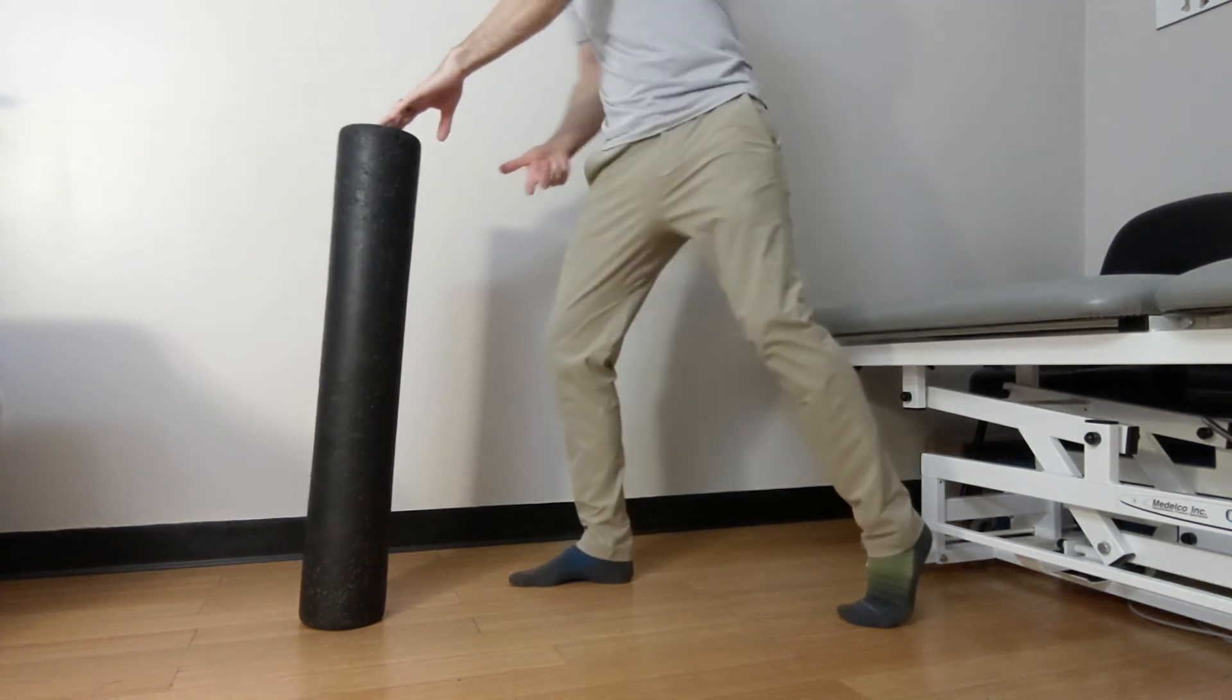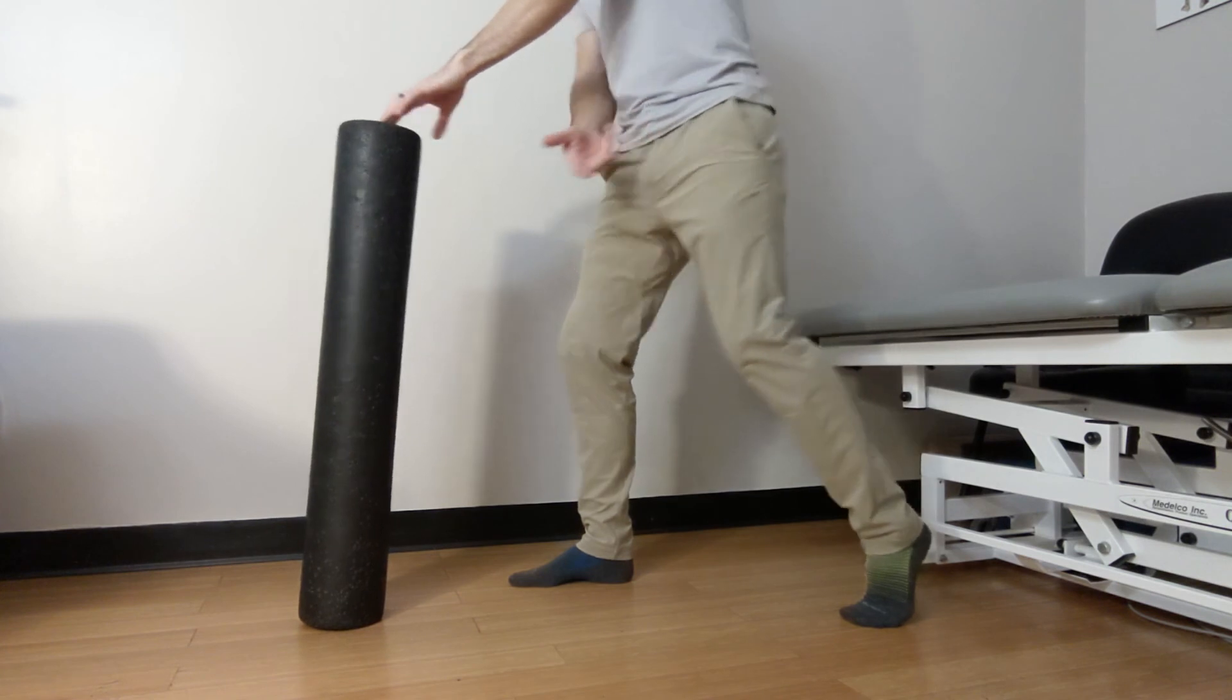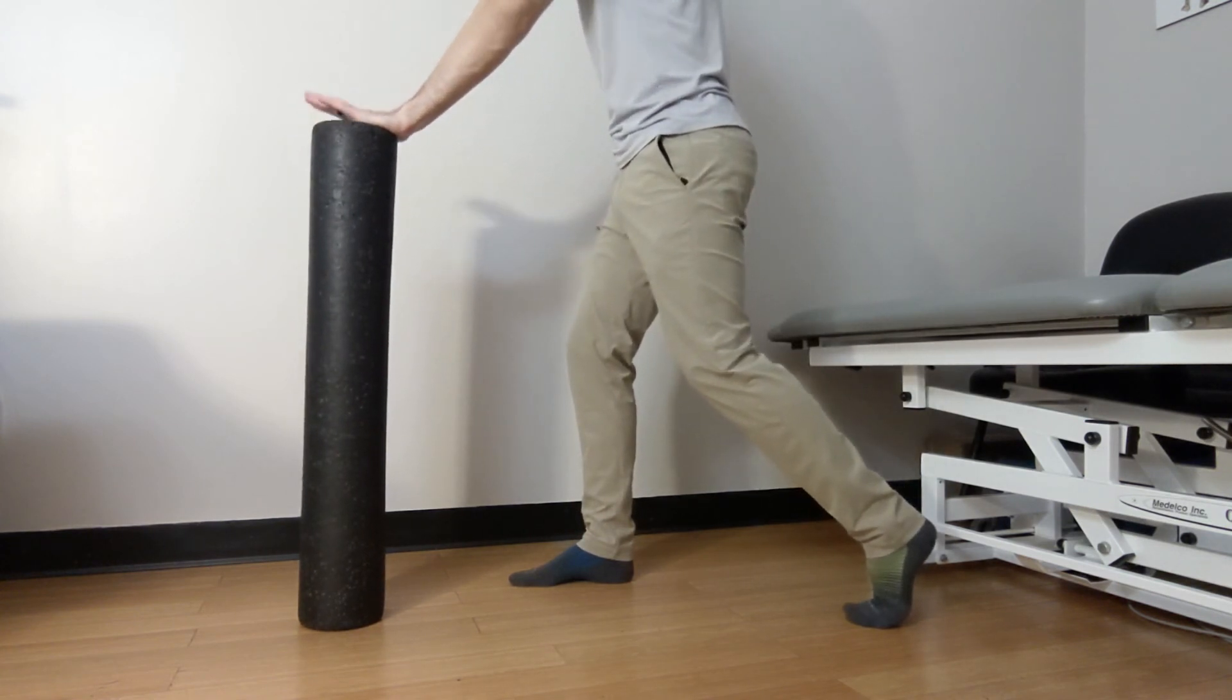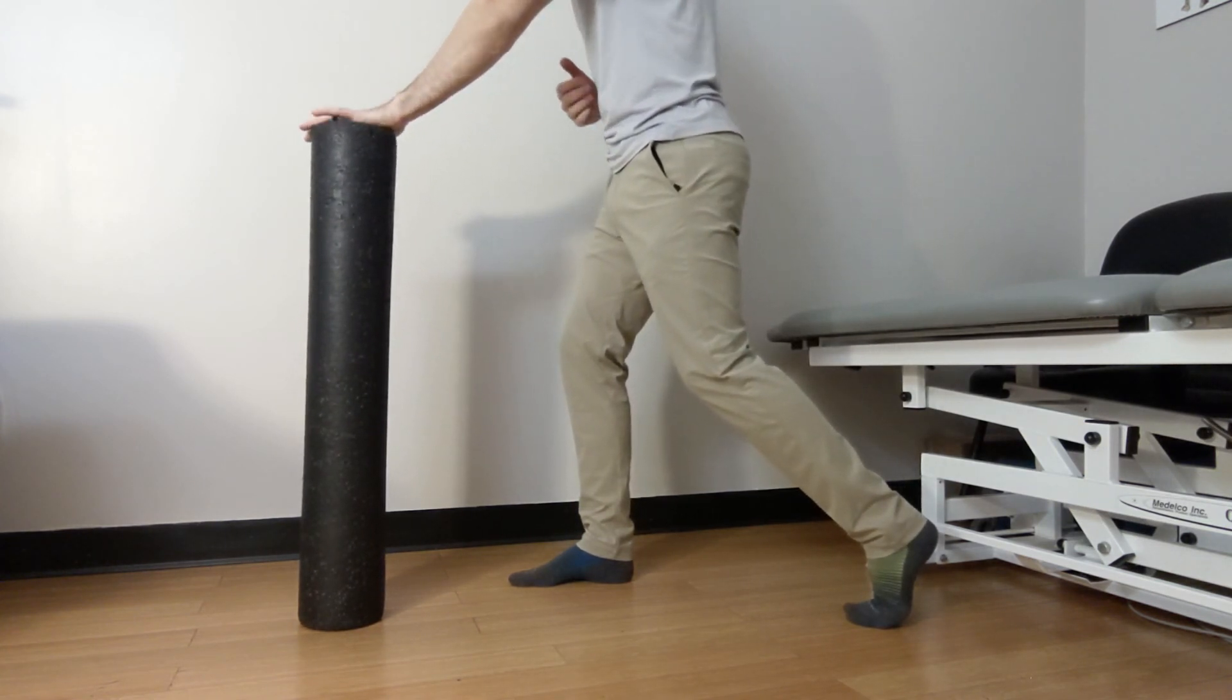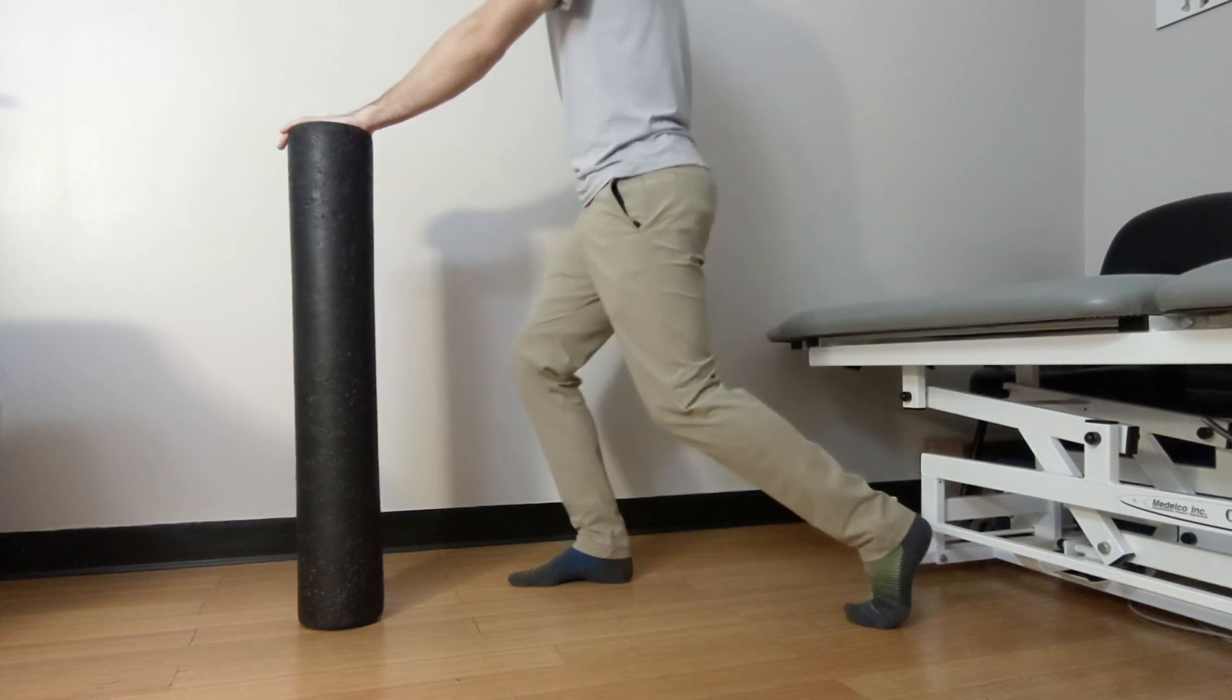As we do this, we want to make sure we're not turned away from the foot. That's also why we use the opposite arm as support, so that it keeps us rotated towards the working leg.